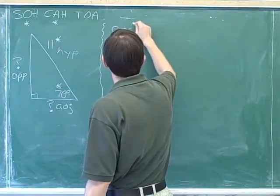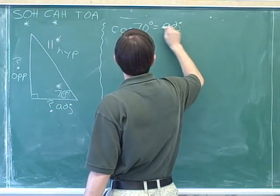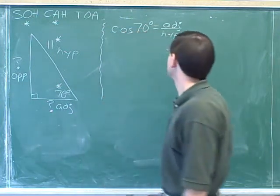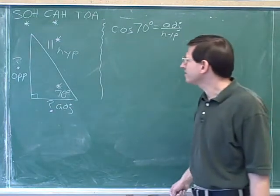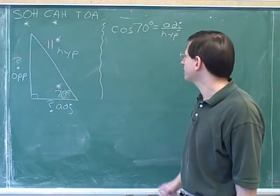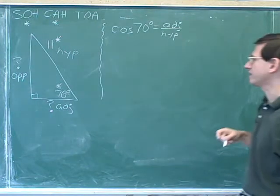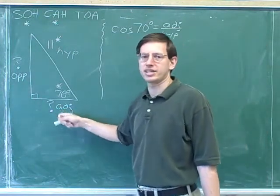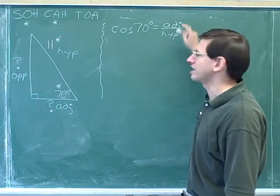Cosine of 70 equals the adjacent side over the hypotenuse. Now in this case, I'm not going to plug in quite yet. Instead, I'm going to do some algebra. What we want to figure out is the adjacent side, so we have to get it by itself.